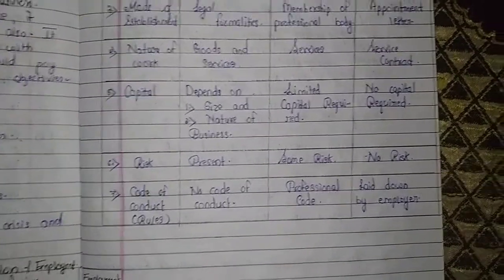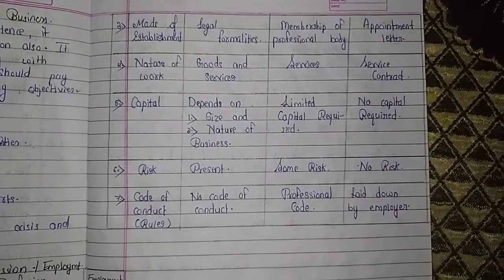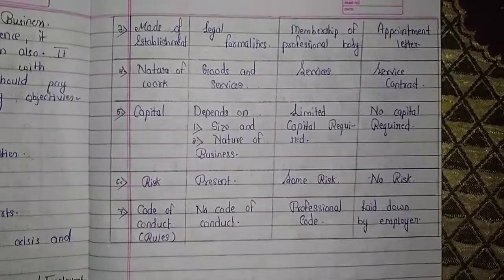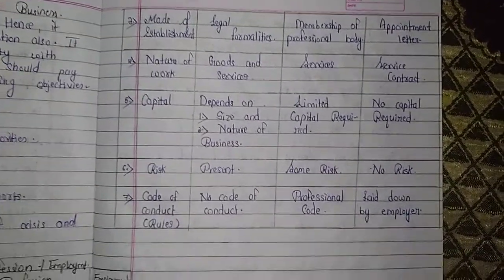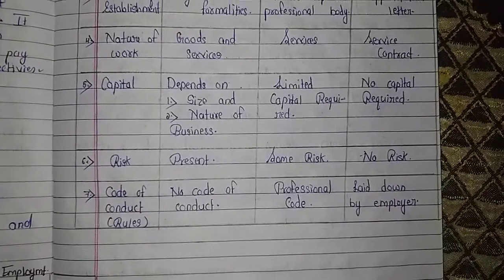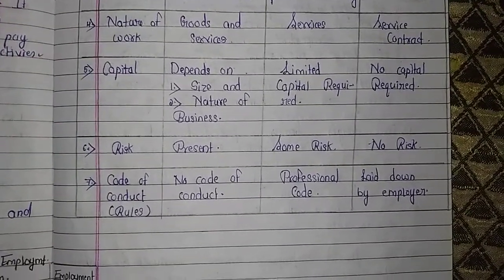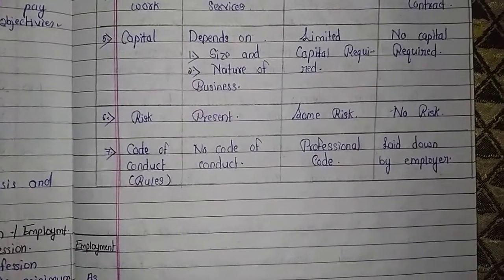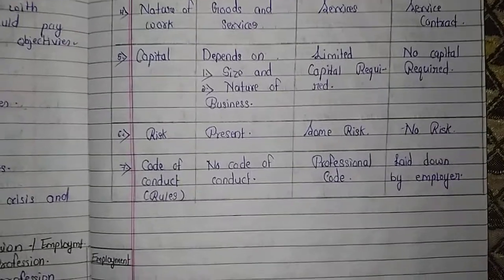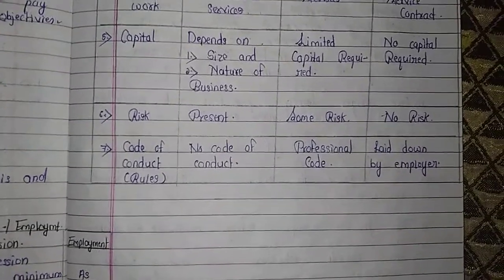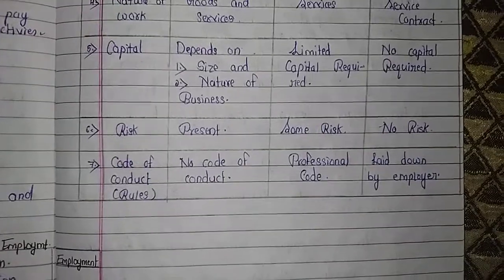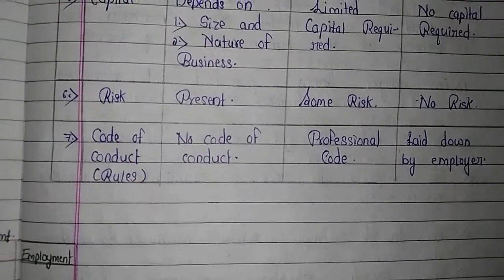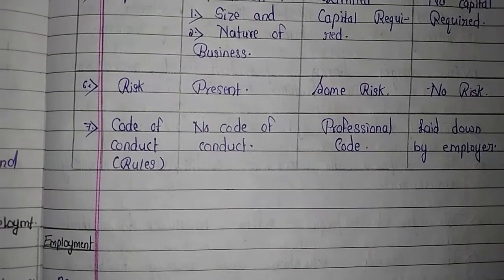Fifth is capital. In business, capital depends on the size and nature of the business. In profession, limited capital is required. In employment, there is no capital requirement. Sixth is risk — in employment there is no risk, whereas business carries risk.